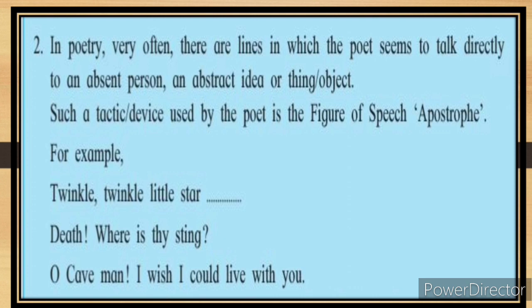In poems, where the poet directly addresses someone or shares an idea with someone — whether a thing or an object — that figure of speech is called apostrophe. For example, 'Twinkle twinkle little star' and 'Oh cave man, I wish I could live with you' — here 'death' and 'cave man' are directly addressed. Similarly, 'Oh God,' 'Oh Lord' are examples of apostrophe.